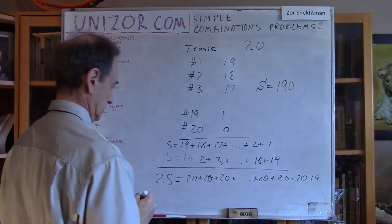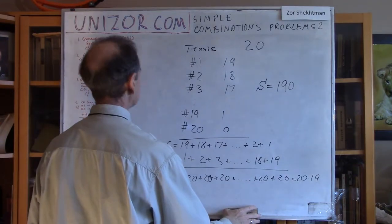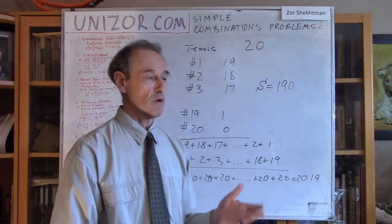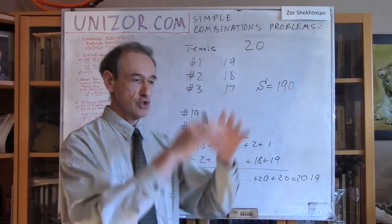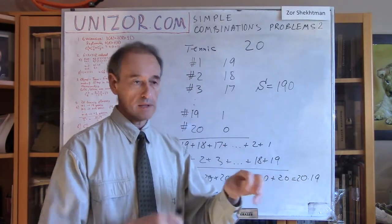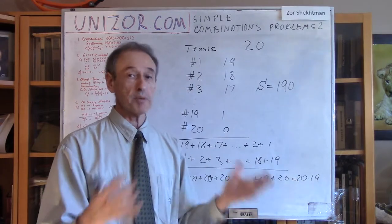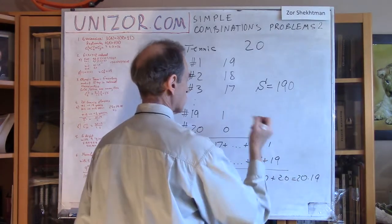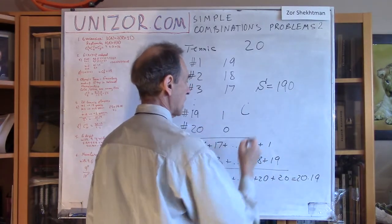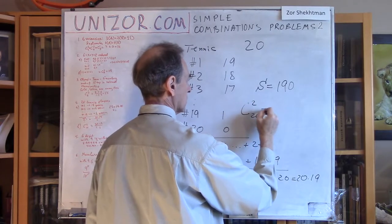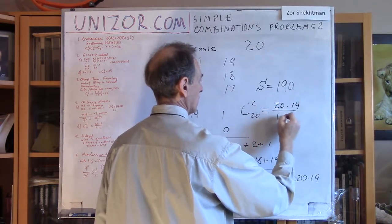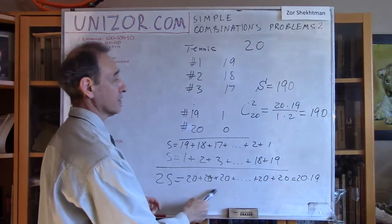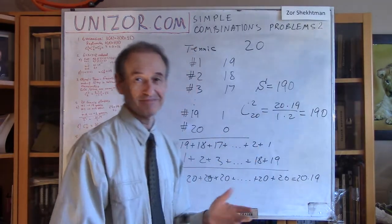Combinatorially, each match corresponds to a pair of players, so the answer is C(20,2) = 20×19 / (1×2) = 190 — exactly the same result. The arithmetic progression formula and the combinations formula agree.